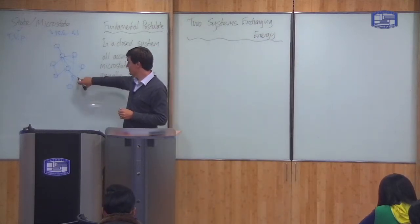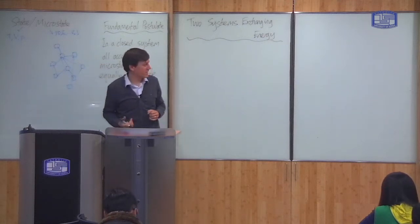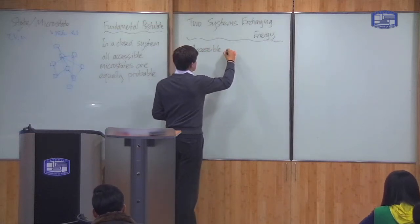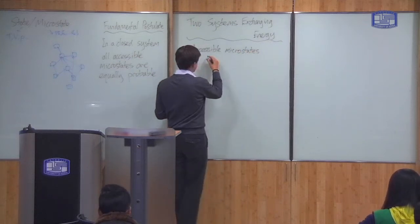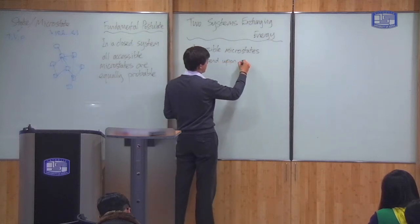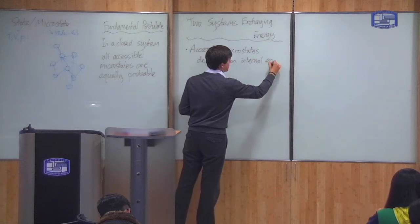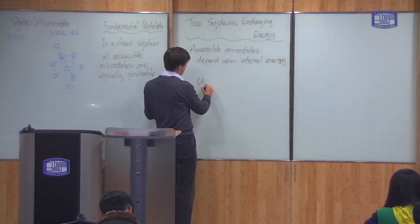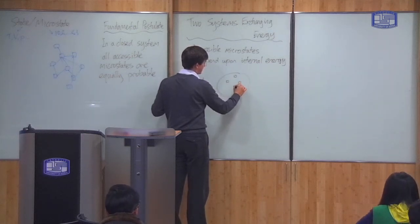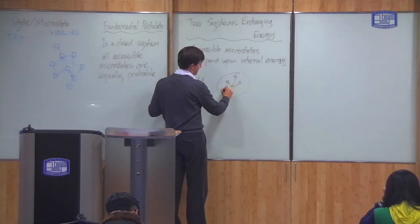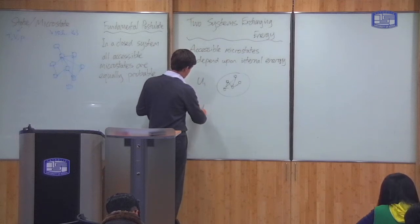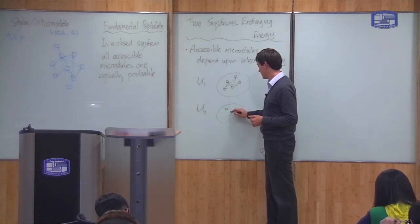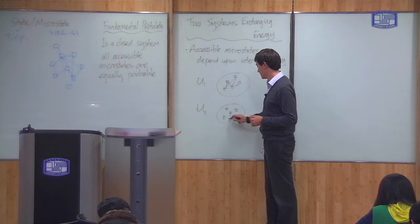In general, the microstates that a certain system can have depend upon its state, and in particular depend upon the energy of the system. The accessible microstates depend upon the internal energy. If the system has some internal energy U1, there will be a certain network of microstates which you can cycle between. But if I go to a different energy U2, I will have a different array of microstates — different microstates at a different energy. The network and its connections will all be different.